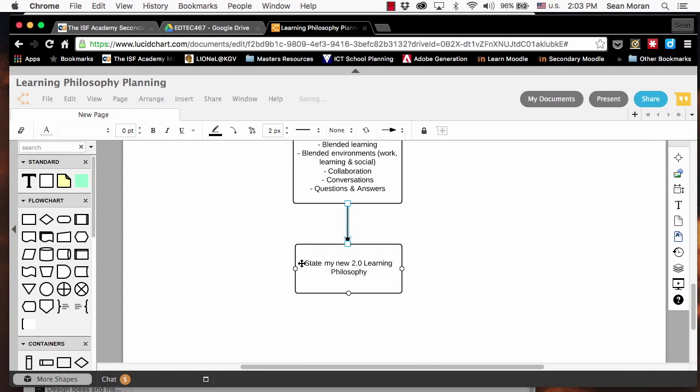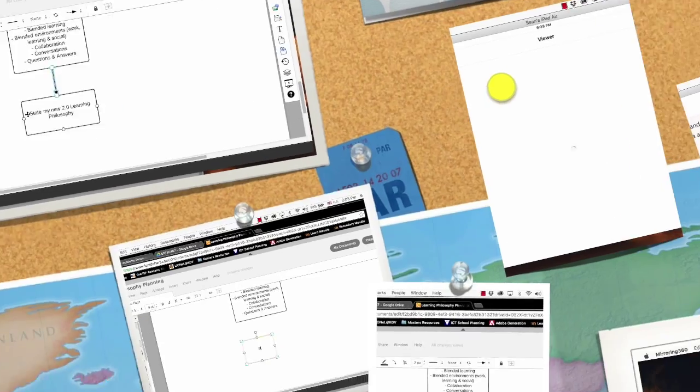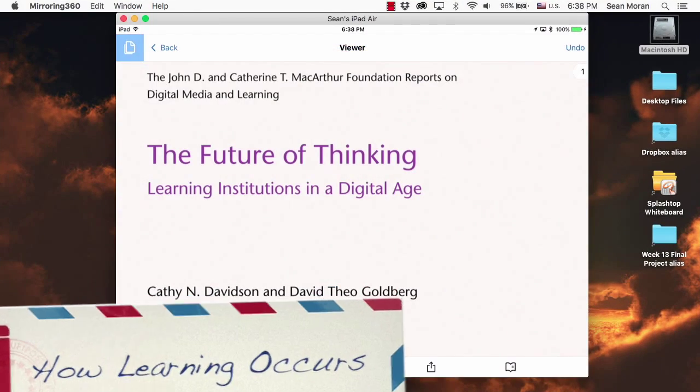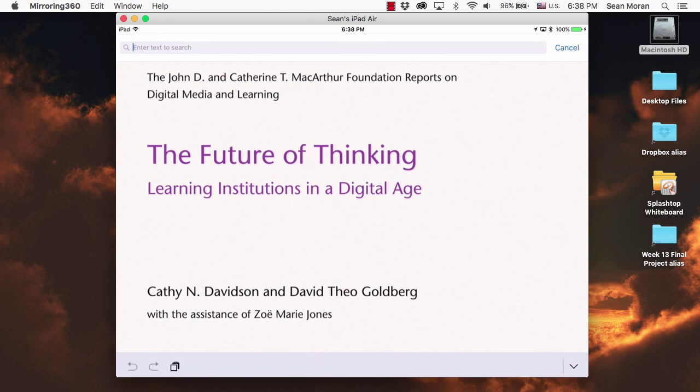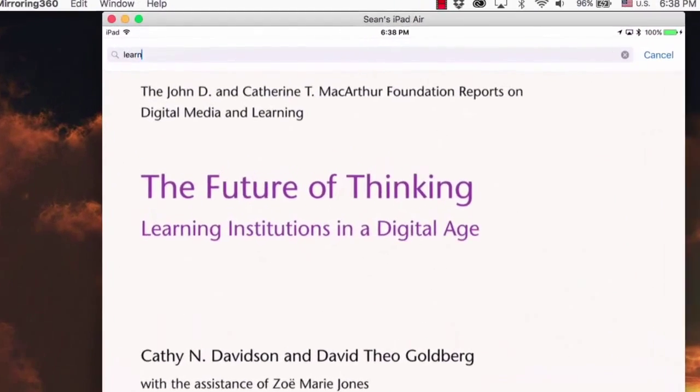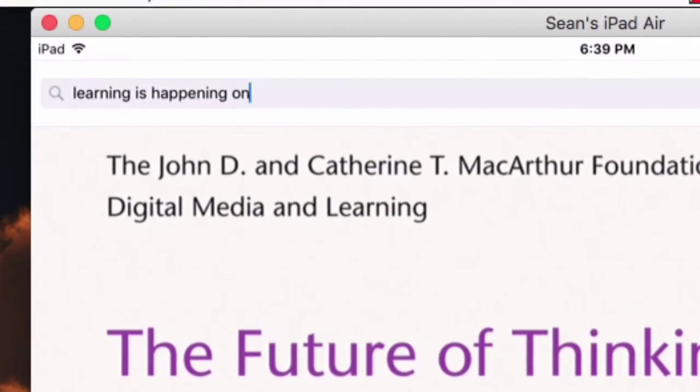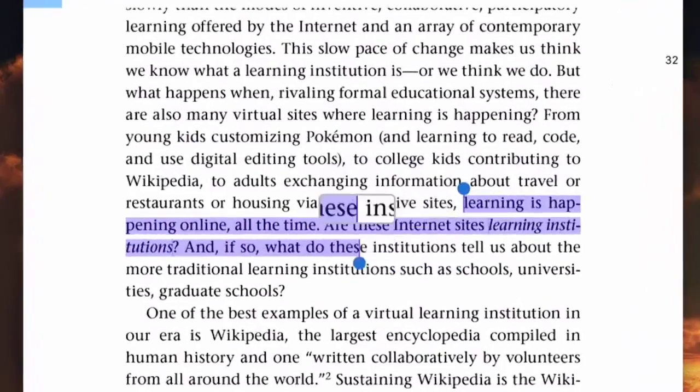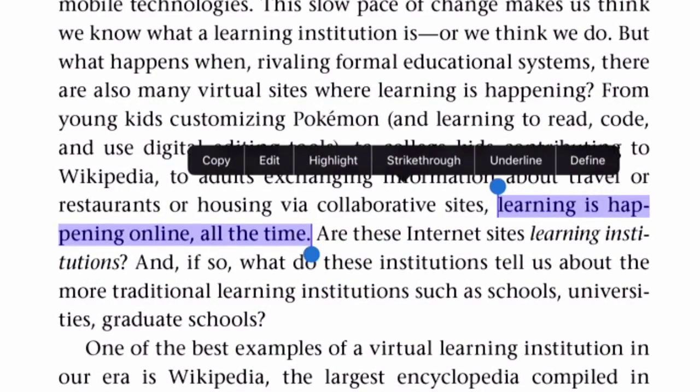What I'd like to do now is review a few of the things that we've learned in the course. For example, in The Future of Thinking, Kathy Davison and David Theo Goldberg discussed the locations of learning and they commented that learning is occurring and happening online all the time.